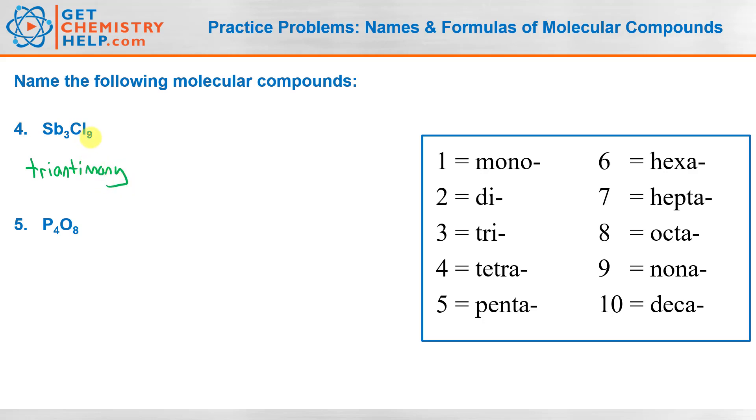And then we have nine chlorines, so nine we see is nona. Again we change chlorine to chloride because it's the second nonmetal. And number five, P4O8, so four is tetra, so that'll be tetraphosphorus. Then eight oxygens, it's going to be octaoxide. I'll just point out again you don't need to drop the A here. That was an old rule for nomenclature. The more modern rules say to keep the vowel, so it is octaoxide.